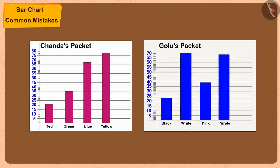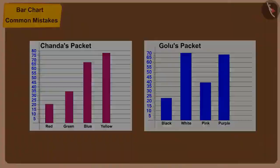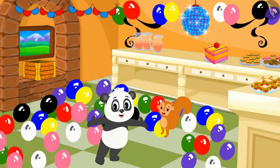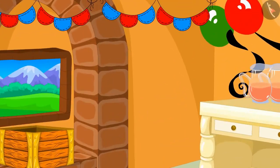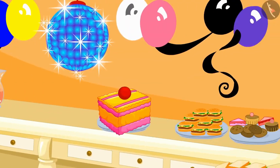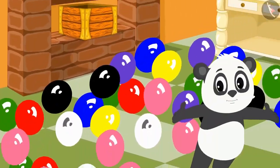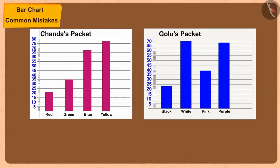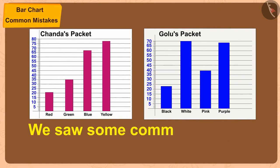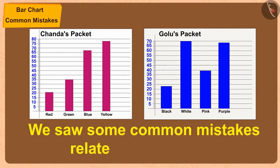Chanda and Golu made their own bar charts and with the help of that information, decorated Bhola's house with beautiful balloon patterns for his birthday. Children, in this video we saw some common mistakes related to bar charts.